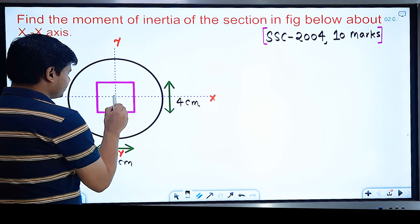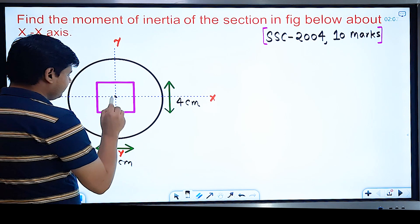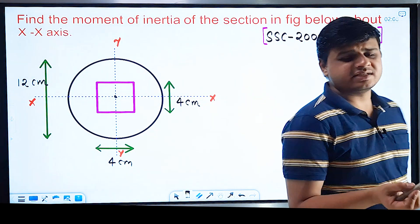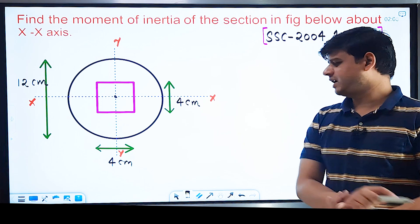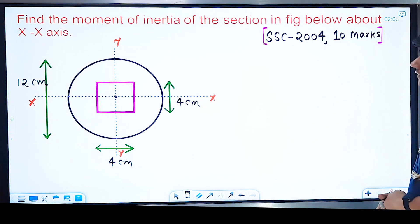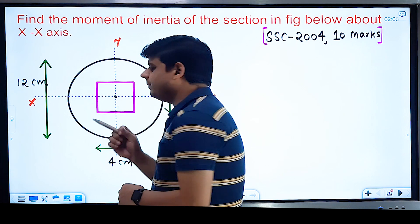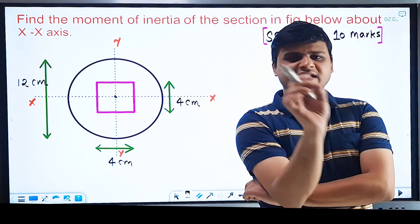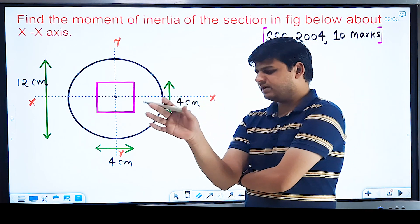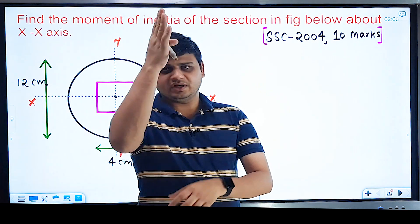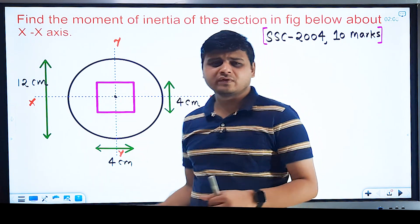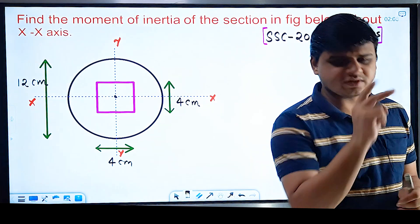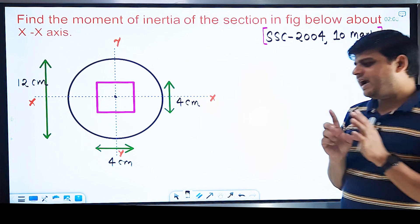Since the section is symmetrical, the centroid (CG) will lie at the symmetrical point. The CG will always be at the point where both axes of symmetry intersect. This is an important point to remember: if a figure has symmetry about both axes, the CG lies at their intersection.